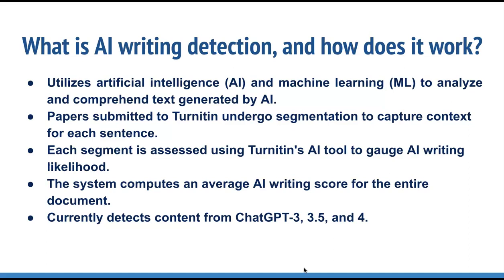Turnitin's tool currently detects content from ChatGPT-3, GPT-3.5, and GPT-4 models, and there are ongoing efforts to ensure that as new GPT models are released, Turnitin's AI detection processor will still be able to keep up with that.